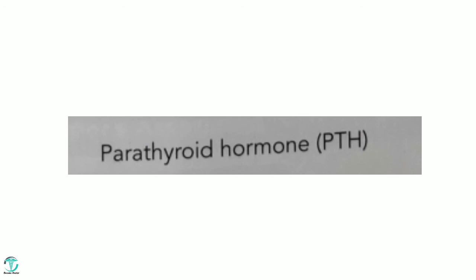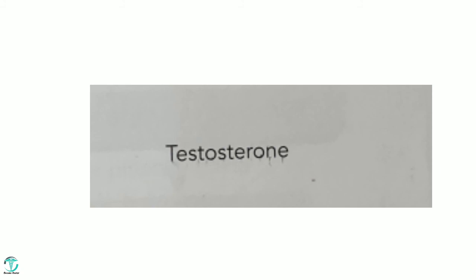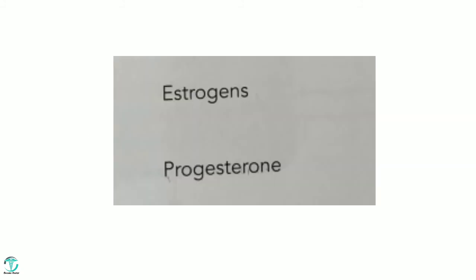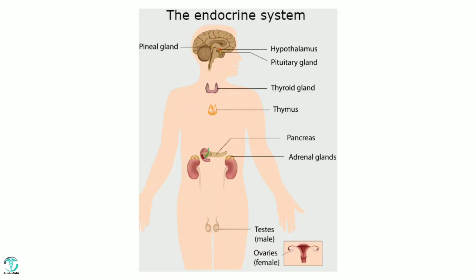The ninth gland is the testes, which secretes testosterone. The tenth and last gland is the ovaries, which secrete estrogen and progesterone. So altogether we have discussed the endocrine glands and their hormones in a nutshell.